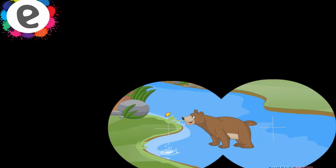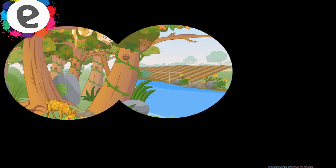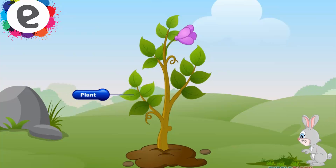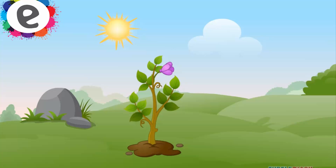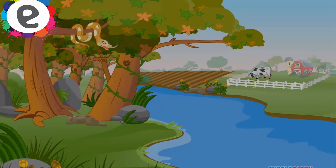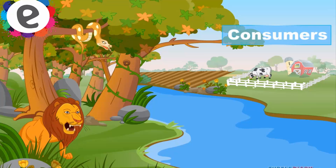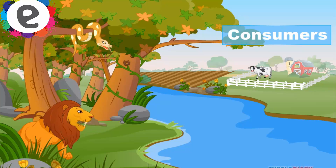Food chain. All living things need energy in order to live and they get this energy from the food they eat. All food chains start with plants and end with animals. Plants are called producers because they produce their own food from sunlight, water, and the nutrition that they get from the soil. Animals are called consumers because they cannot prepare their own food and are directly or indirectly dependent on plants for their energy.